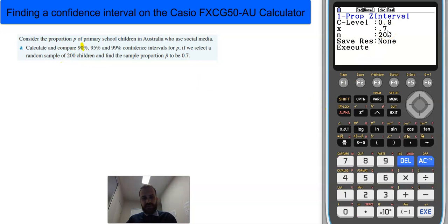Here, I can just put 0.7 times 200, and that'll give me 140. There were 140 people in my sample who said that they used social media.